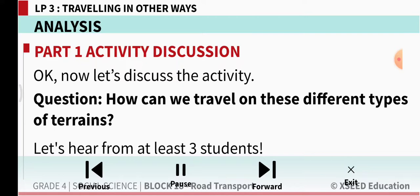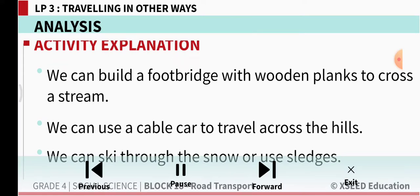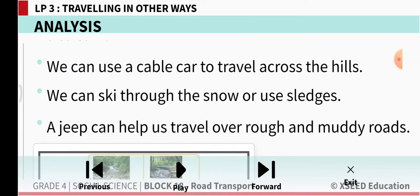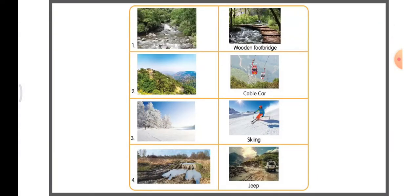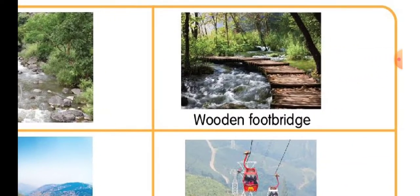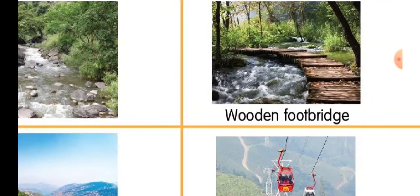How can we travel on these types of terrains? We can build a footbridge with wooden planks to cross a stream. If we want to go to the other side of the stream, we can use a footbridge made of wooden planks. We can use a cable car to travel across the hills. We can ski through the snow or use sledges. A jeep can help us travel over rough and muddy areas. So: over a stream — wooden footbridge; over the hills — a cable car.